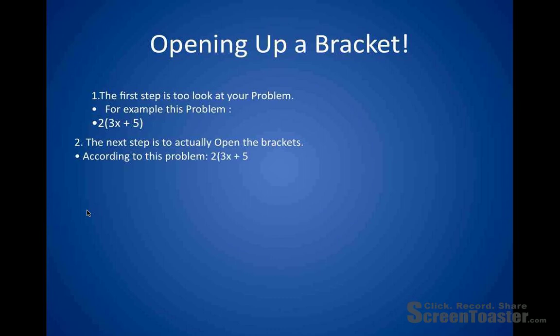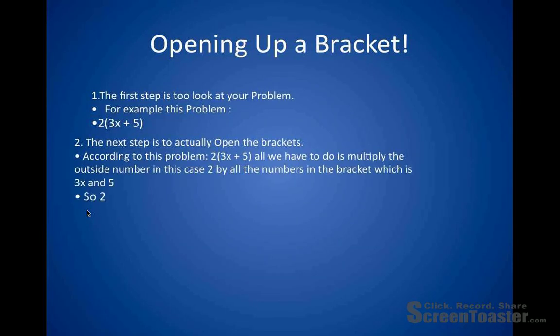The next step is to actually open the brackets. According to this problem, 2x and parentheses 3x plus 5, all we have to do is multiply the outside number, in this case 2, by all the numbers in the bracket, which is 3x and 5. So 2 times 3x equals 6x, and 2 times 5 equals 10.